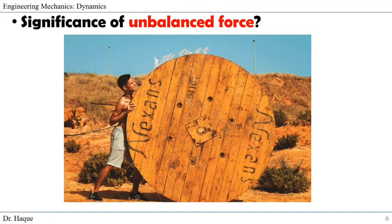Another significance. Here the boy needs to overcome the friction force to be able to move the roller. Now if he applies a force less than the friction force, it will be balanced by an equal opposite friction force.